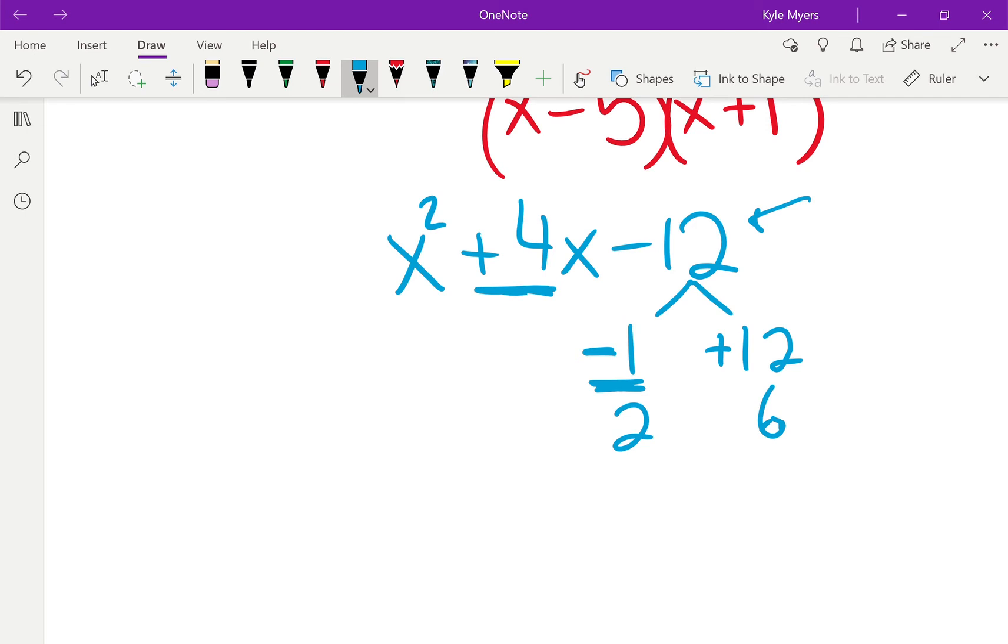So, 2 and 6, and then the last two factors would be 3 and 4. But, we haven't checked 2 and 6 yet. If I make 2 negative and 6 positive, negative 2 plus 6 is positive 4. So, it works.